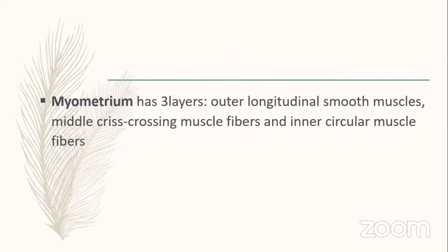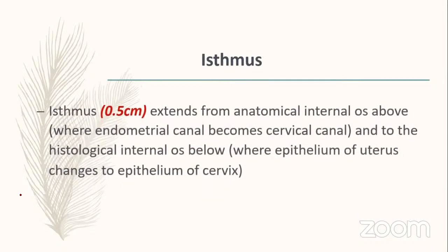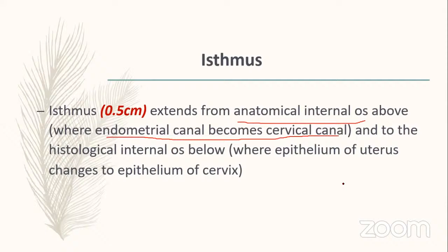Myometrium has three layers: outer longitudinal smooth muscle, middle crisscrossing muscle fibers, and inner circular muscle fibers. The middle crisscrossing layer acts as a living ligature during involution of the uterus and prevents blood loss. The isthmus is 0.5 cm long, extending from the anatomical internal os above.